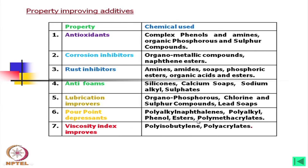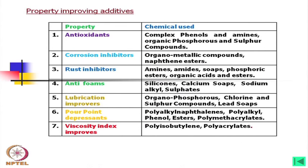For pour point depressants: polyalkyl phenol esters and polymethacrylates. The last property, which is very important, is viscosity. Viscosity index improvers — what the viscosity index is we will come to in the next slides — use polyisobutylene and polyacrylates. It is not required that you remember the names of all such chemical compounds; this is only for an idea of what properties we need and how they can be improved.